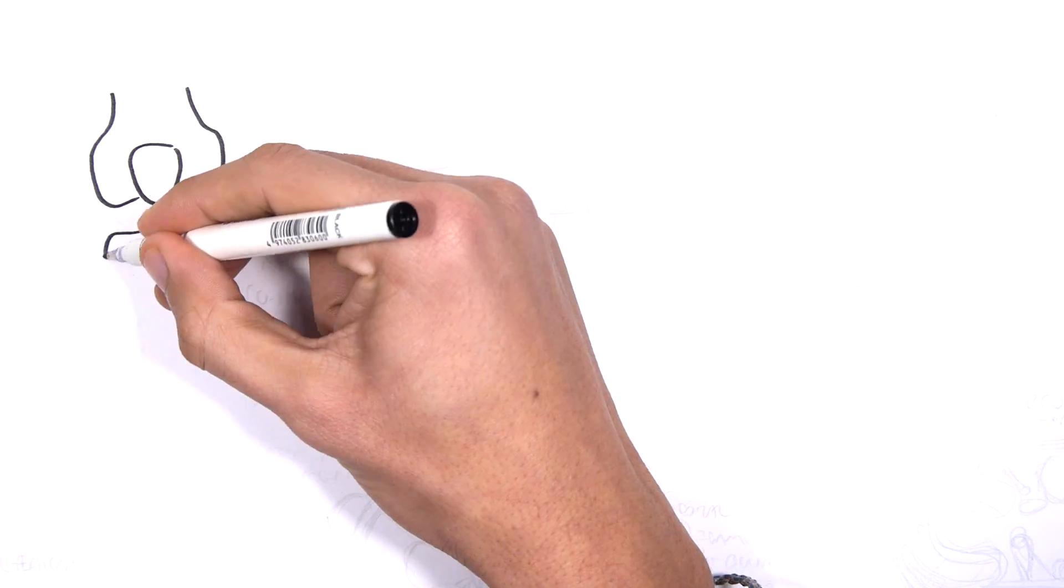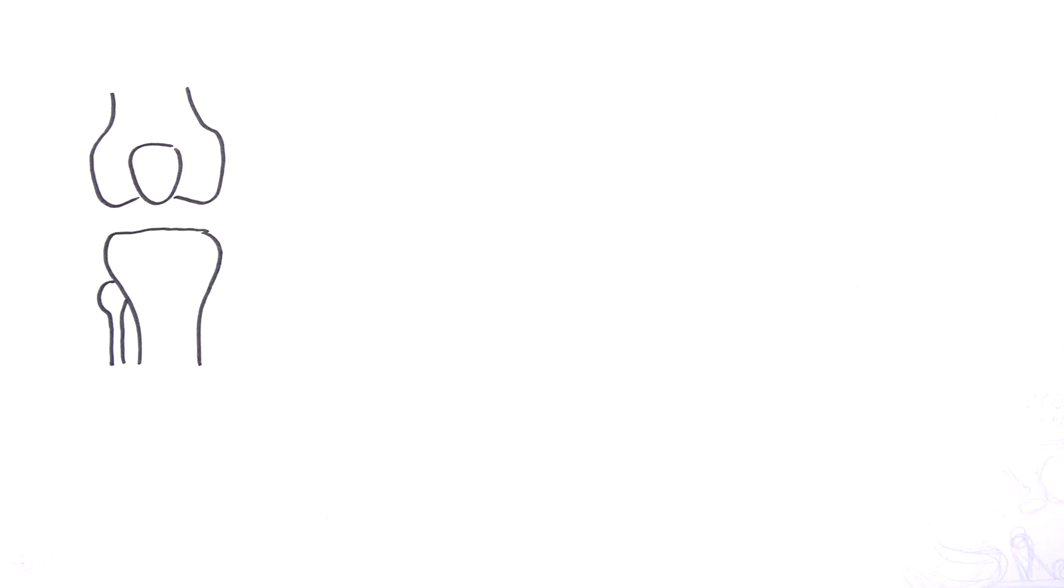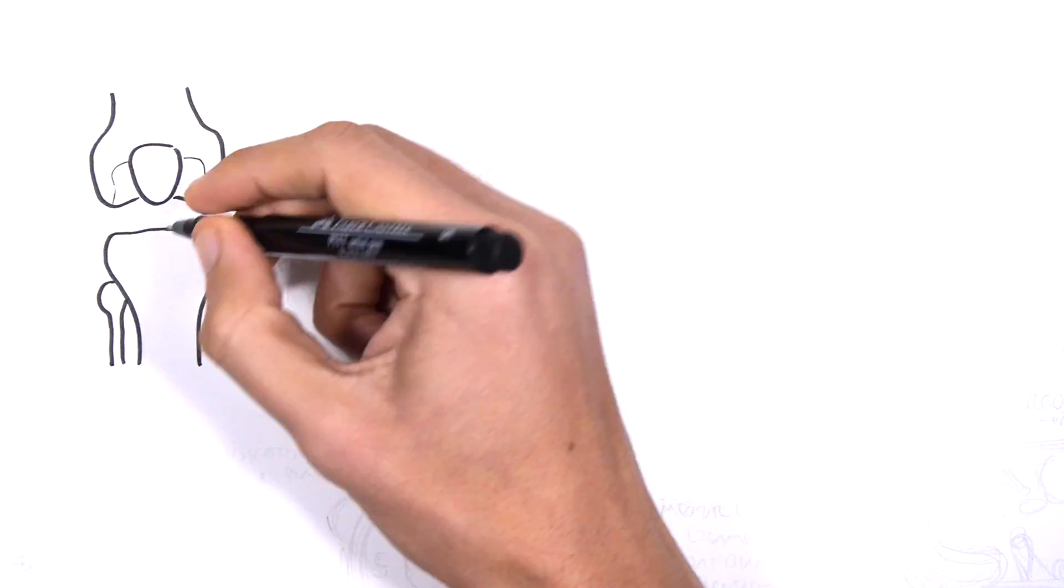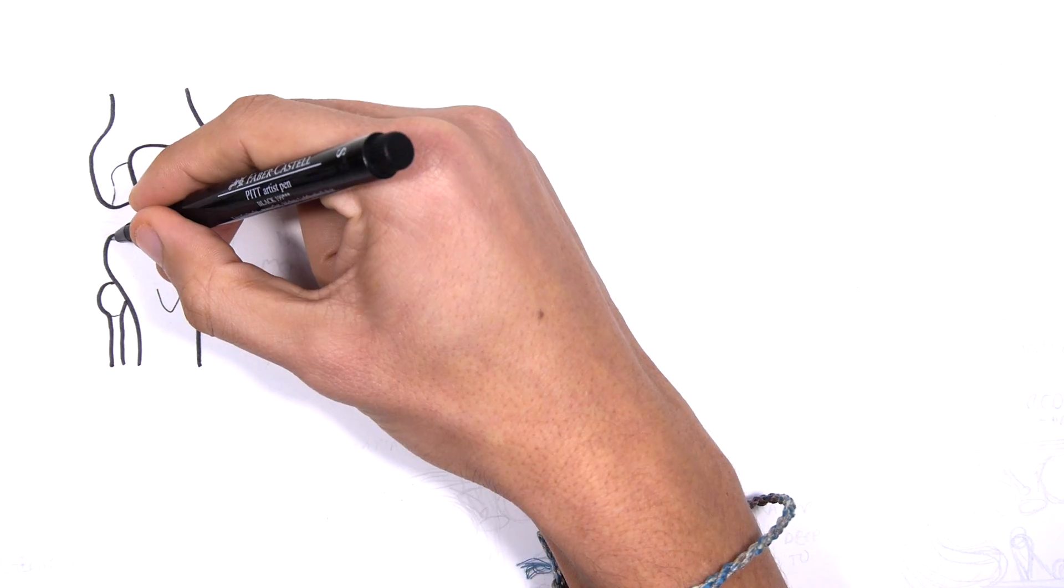So we'll first look at the right knee from an anterior view. The knee is made up of three bones: the femur, the tibia, and the patella.